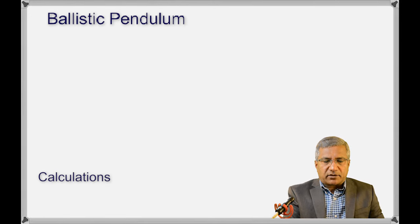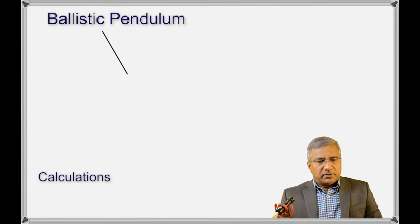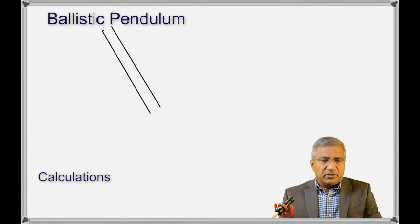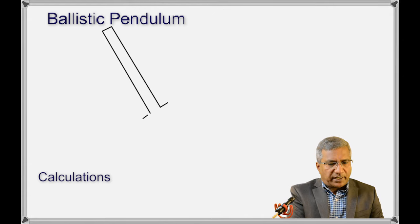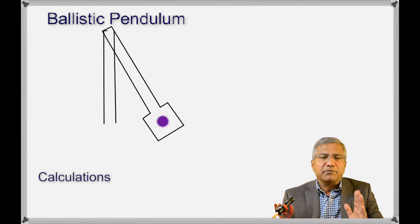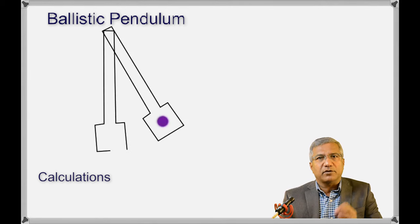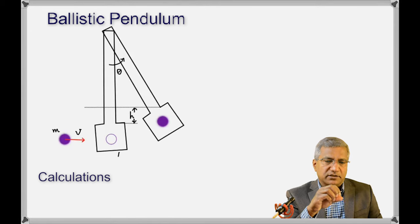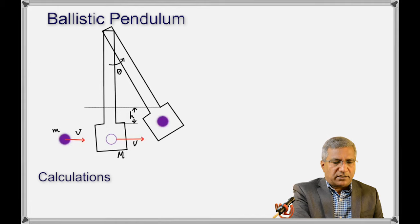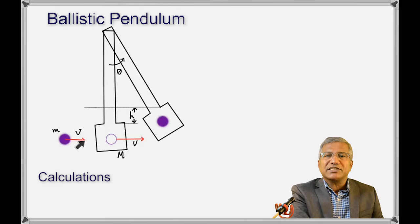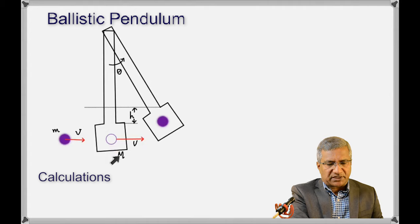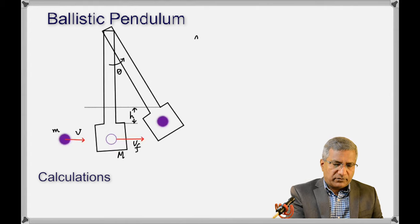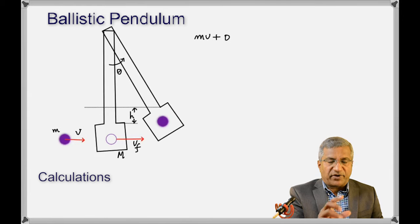Now let's get to the calculations. Here you have the final position of the pendulum after it has swung through a certain angle. Initially it was in the vertical position when the angle was zero. The ball is now stuck in the pendulum. The quantities are: little m is the mass of the ball, little v is the velocity with which it came out, caps M is the mass of the pendulum, and v subscript f is the final velocity.